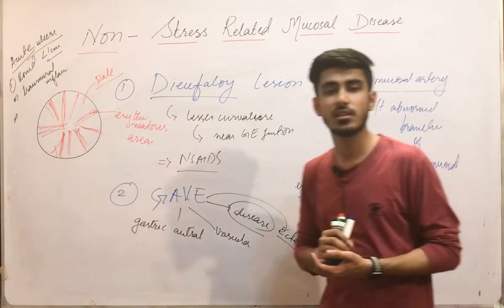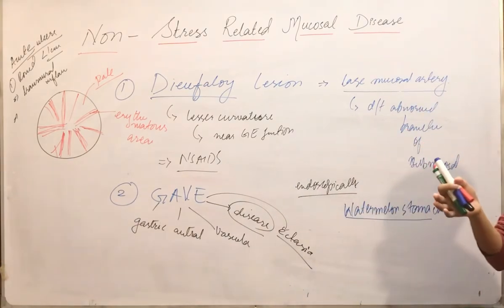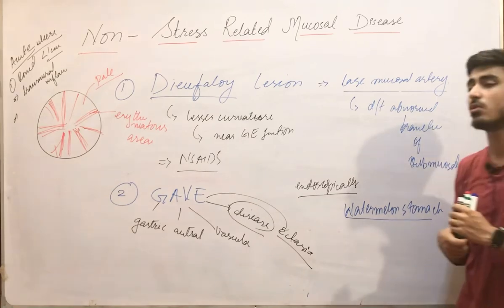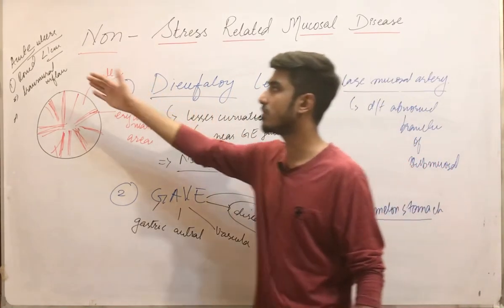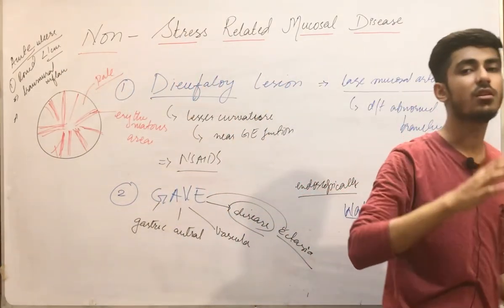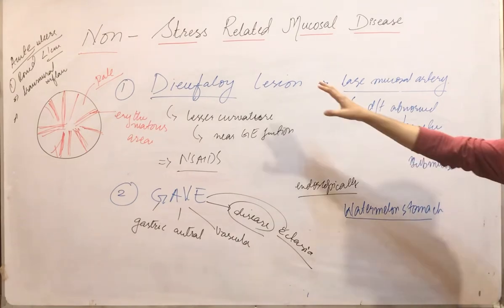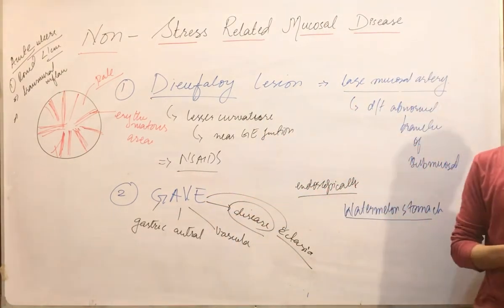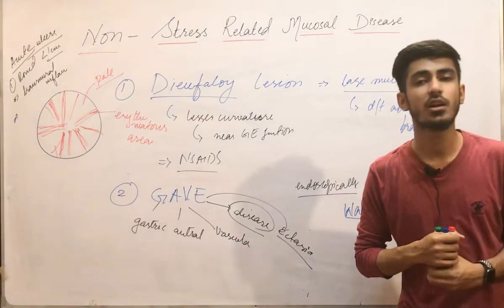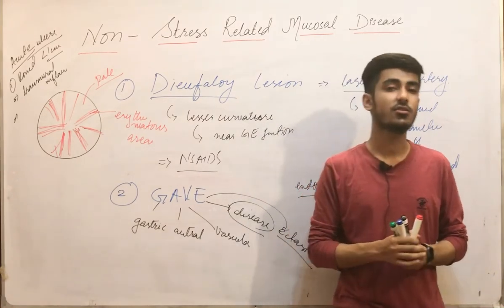In this lecture, we studied stress-related diseases including the three types of ulcers: stress ulcers, curling ulcers, and cushing ulcers. We covered the morphological features of acute ulcers and then moved to non-stress-related mucosal diseases — the Dieulafoy lesion and GAVE disease. If you have any queries, you can ask in the comment section. Thank you so much. Allah Hafiz.